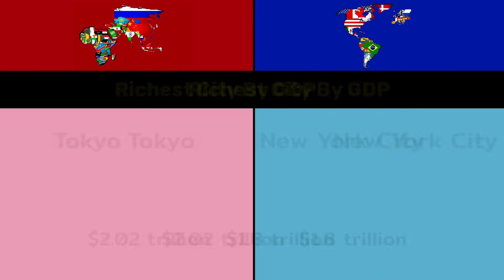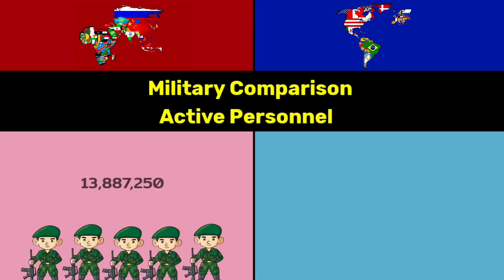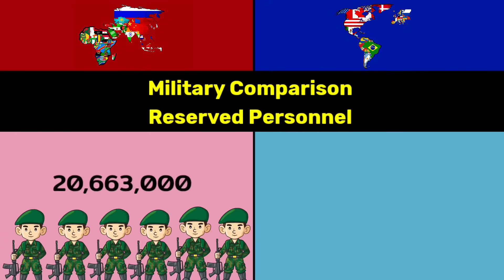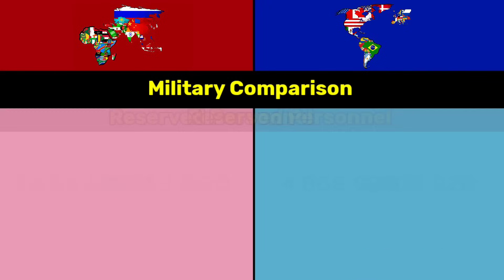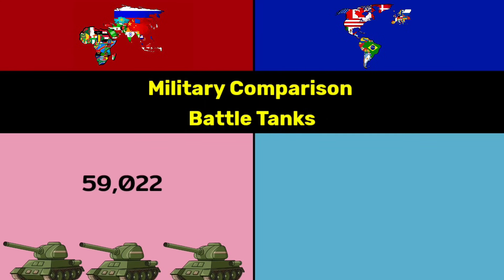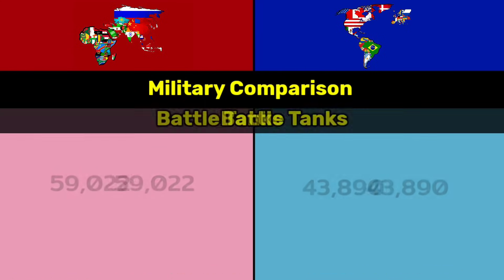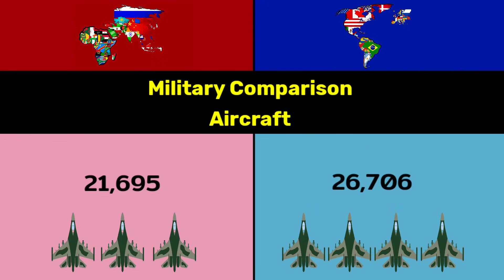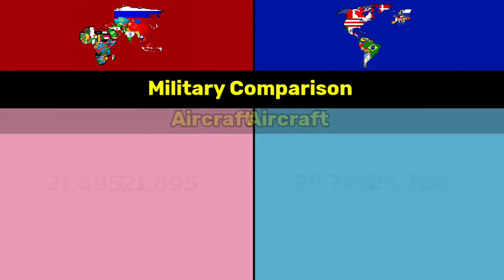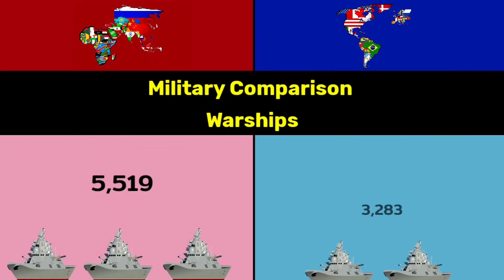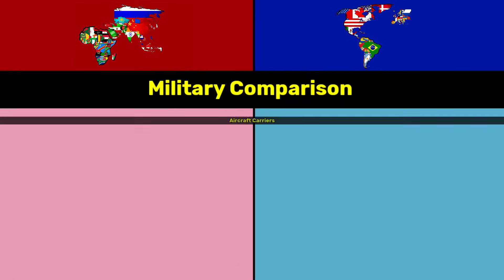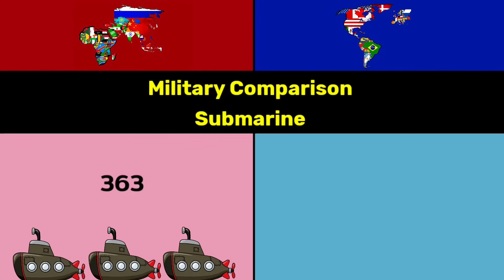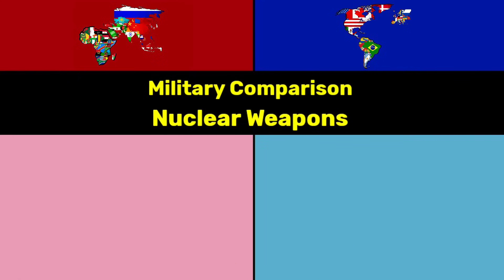Military comparison — active personnel: 13.88 million vs 5.1 million. Reserve personnel: 20.6 million vs 4.8 million. Battle tanks: 59,022 vs 43,890. Aircraft: 21,695 vs 26,706. Warships: 5,519 vs 3,283. Aircraft carriers: 4 vs 17.